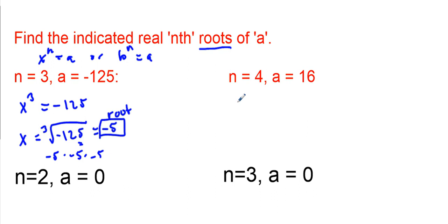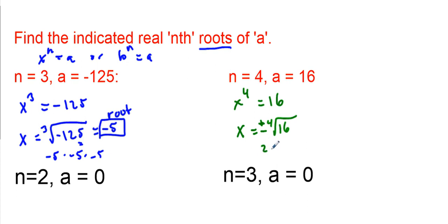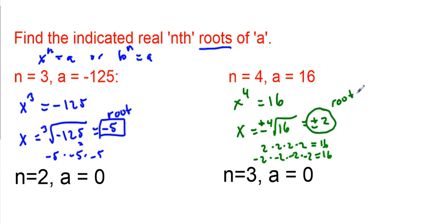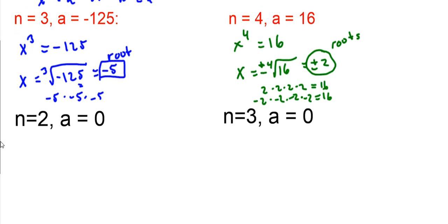Let's try another one. x to the fourth power equals 16. How do we solve for the fourth power? We take the fourth root. When we have a fourth or even power, we're going to have two solutions — both a positive and a negative. What times itself four times gives us 16? That's 2 × 2 × 2 × 2 = 16. Also, negative 2 × negative 2 × negative 2 × negative 2 also equals 16, because negative times negative is positive. So our roots are plus or minus 2 — we have two roots because we used an even power and an even root.